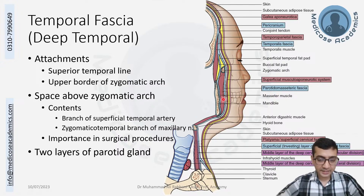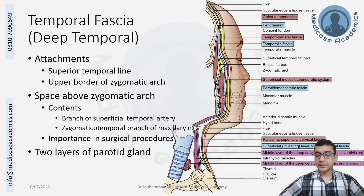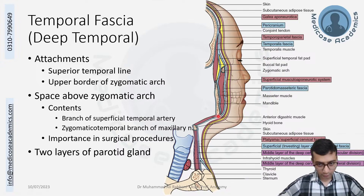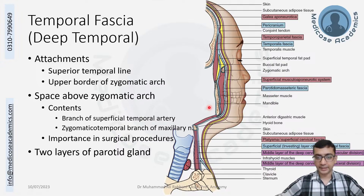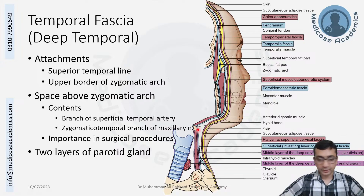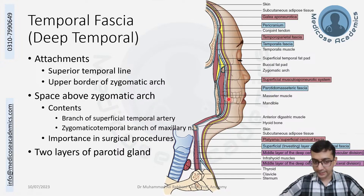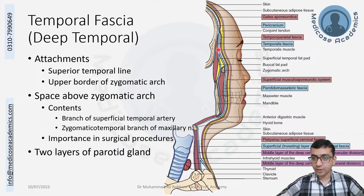From the second lecture on the neck, we discussed the investing layer of deep cervical fascia, which is attached to the inferior margin of the mandible and encloses between its two layers the parotid gland and the submandibular gland, along with the two muscles posteriorly. This is that same extension: following back, the suprasternal space, the investing layer of deep cervical fascia attaches to the hyoid bone, comes to the mandible, splits to form the two layers of the parotid gland, becomes the masseteric fascia, and attaches to the zygomatic bone, above which it becomes the temporalis fascia.